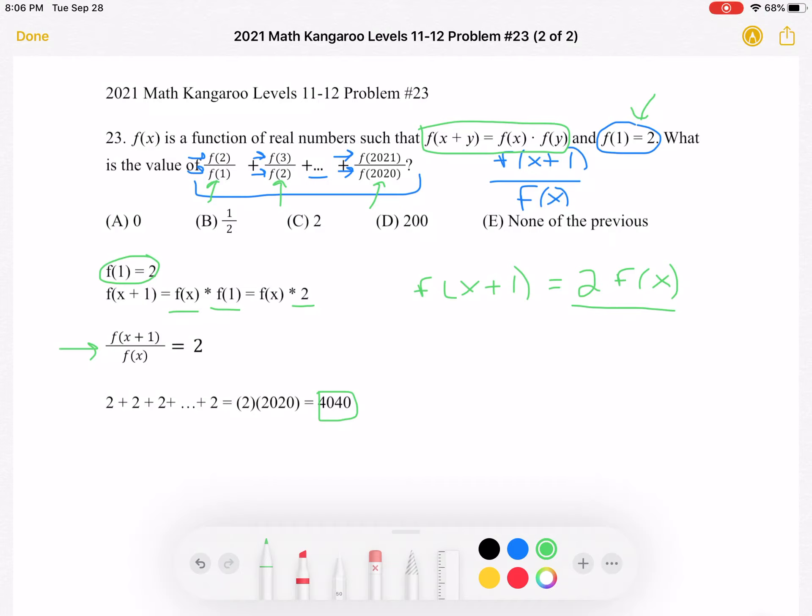Let's see what our correct answer is. It's not any of A through D. So our right answer is actually E, none of the previous.